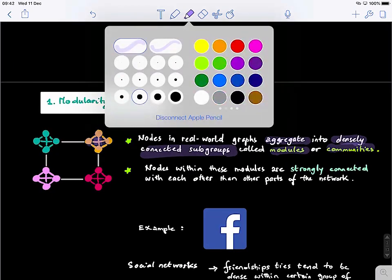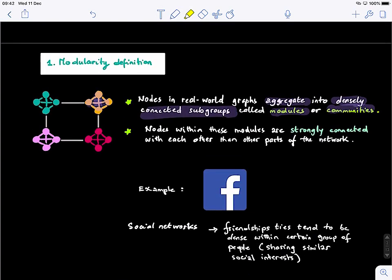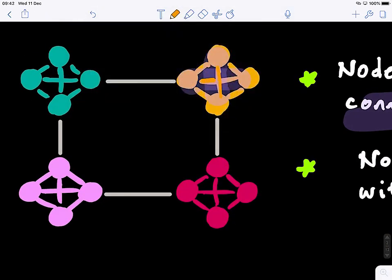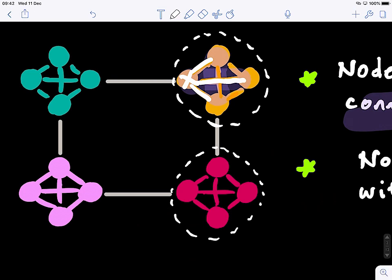Nodes within these modules are strongly connected with each other more than other parts of the network. For example, these guys here, the orange module - each node is strongly connected to all other nodes in this sub-module. But when you examine the relationship between modules, you will see there is only one single connection. The different modules are not strongly connected.